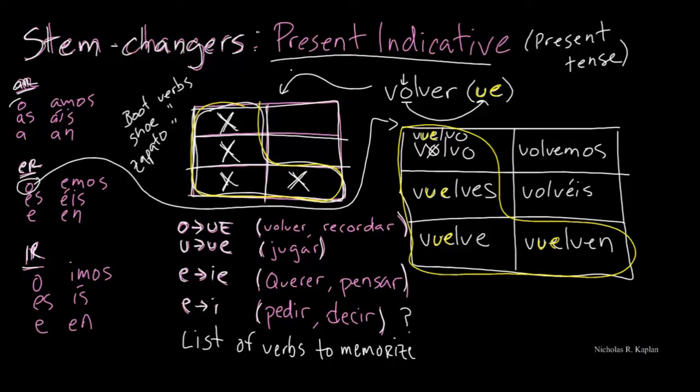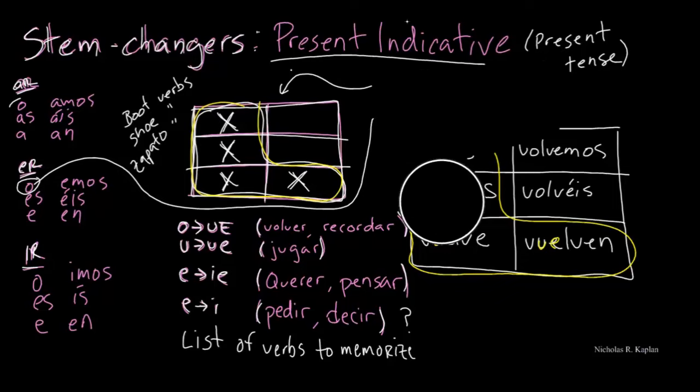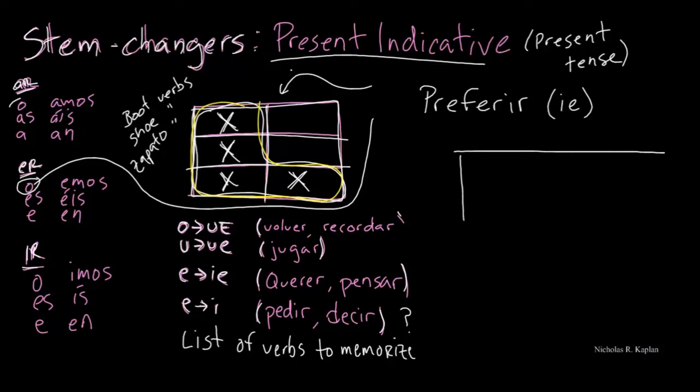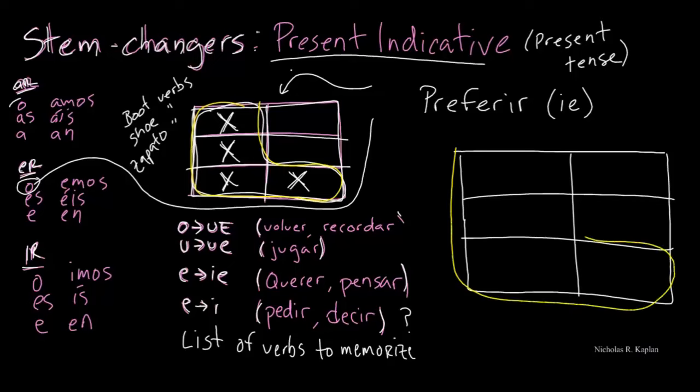Let's go ahead and erase this one and look at another example. And we're going to look at a word that's not on the list right here. Let's look at to prefer. And this one is an E to IE stem changer. So we draw our box of 6. And we know that it's only going to change in our shoe.